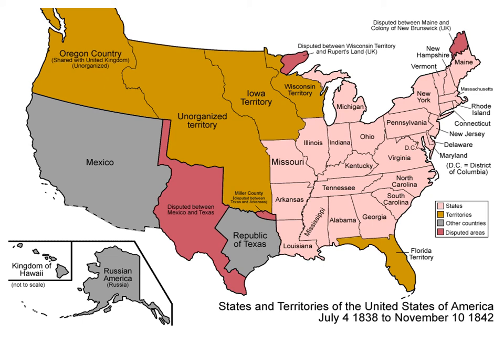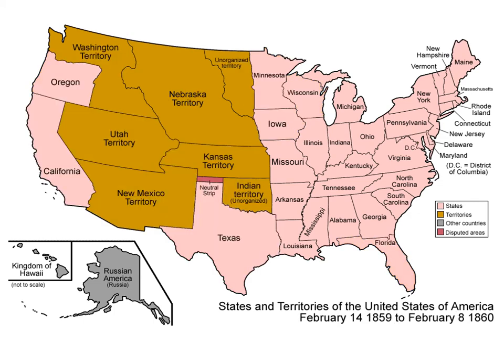Let's fast forward to 1860 and see what the difference is. This is the map from 1860 and you can see some really quite noticeable differences. First of all, you see new states in the north. Secondly, you'll see much more territories where settlers have been moving across the west, settling, building farms.